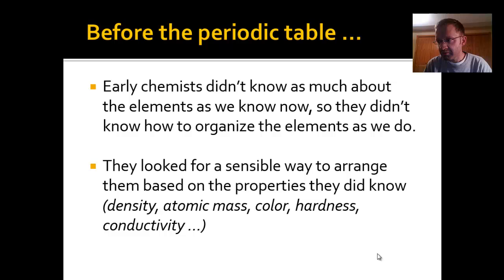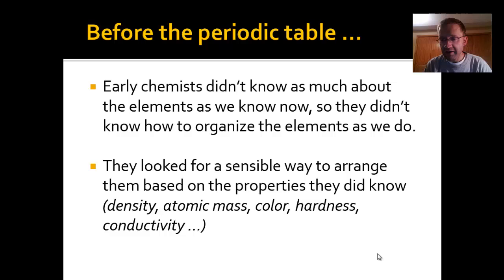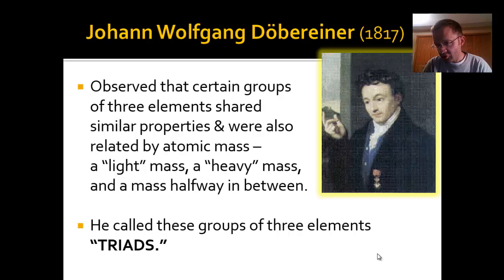They had to base it on pretty simple properties like density, atomic mass, color, hardness of the element, how well it conducted electricity, the things it reacted with, and the kinds of compounds it was forming. They didn't know nearly as much about elements 200-300 years ago as we do now, and things like quantum numbers are fairly new in our history.